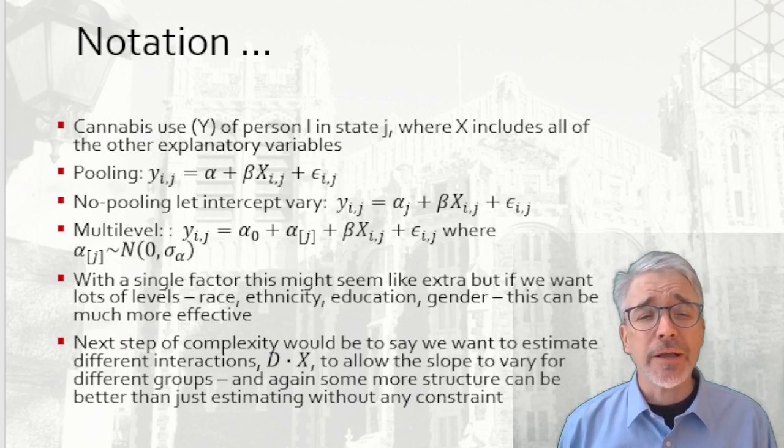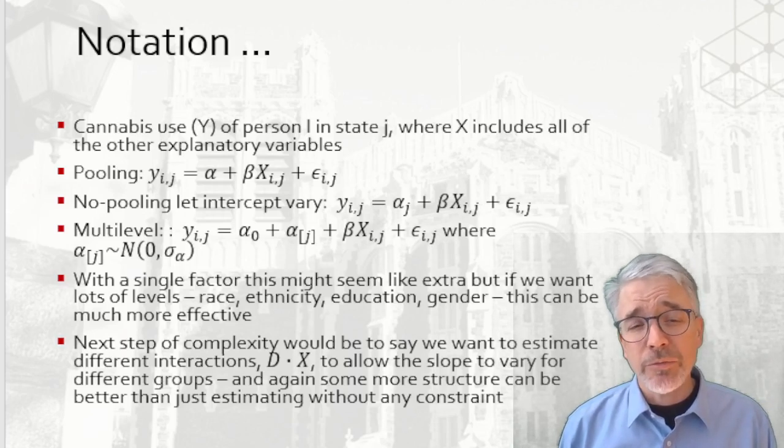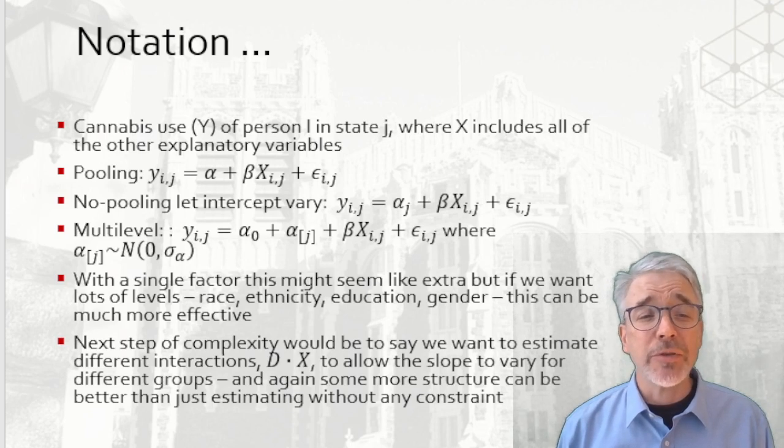With no-pooling, each state gets its own alpha. Each can be different. Y is alpha_j plus beta X_ij plus the error.